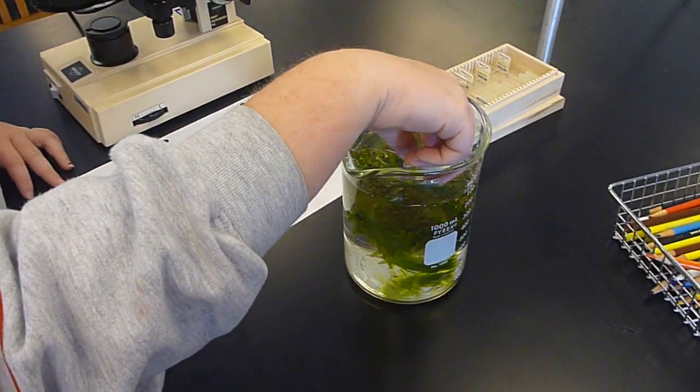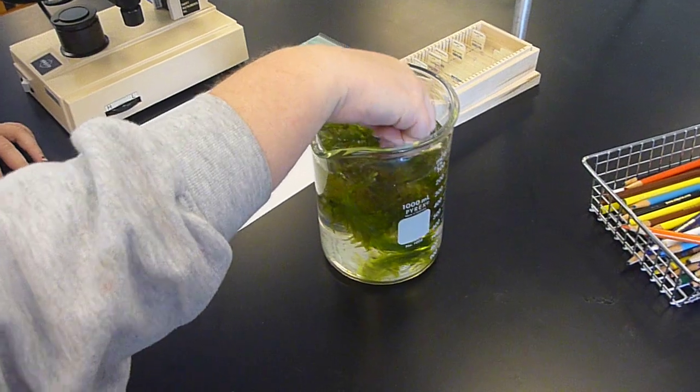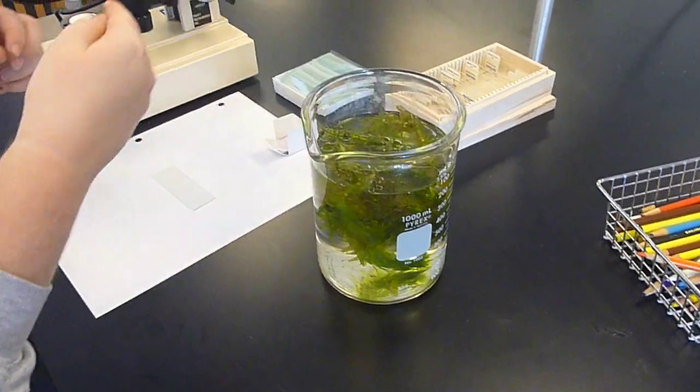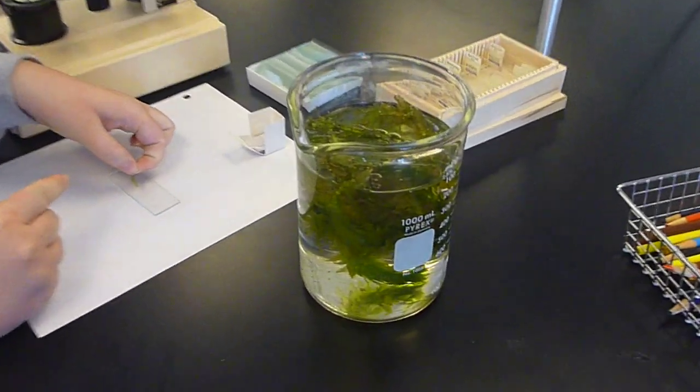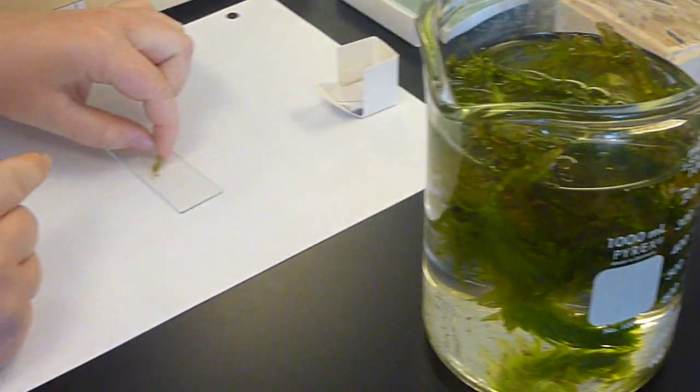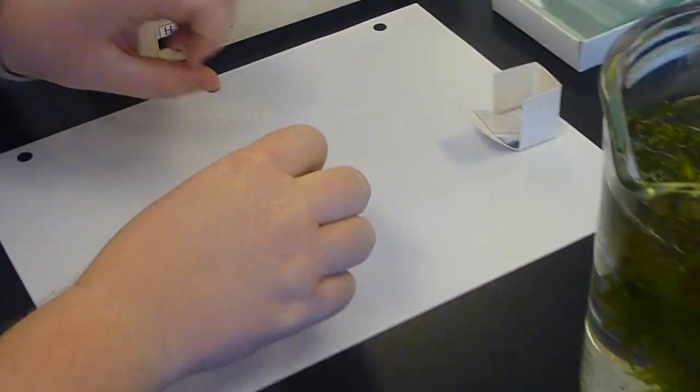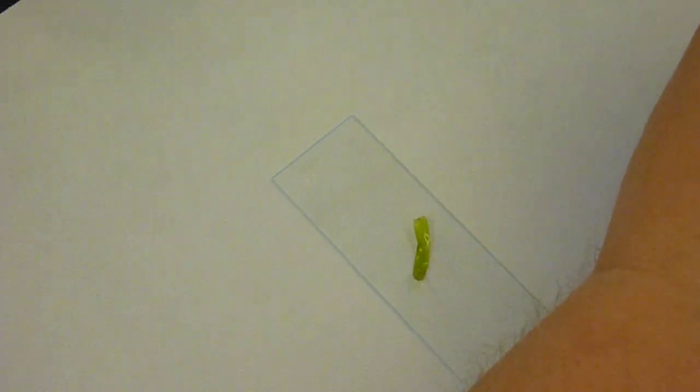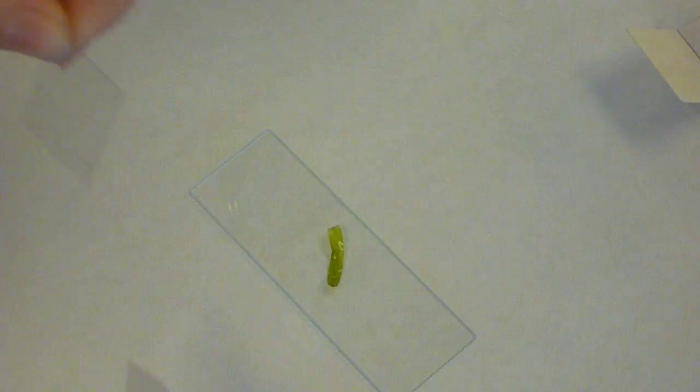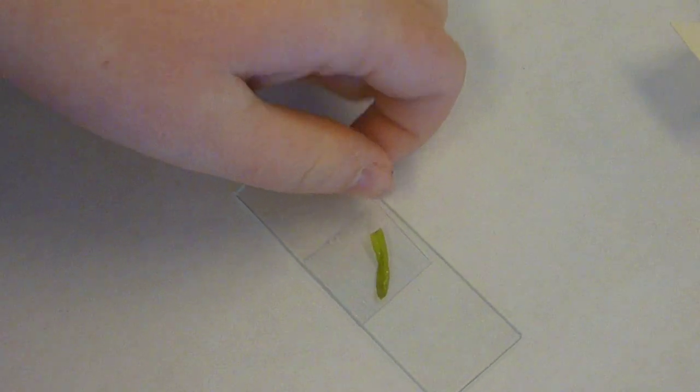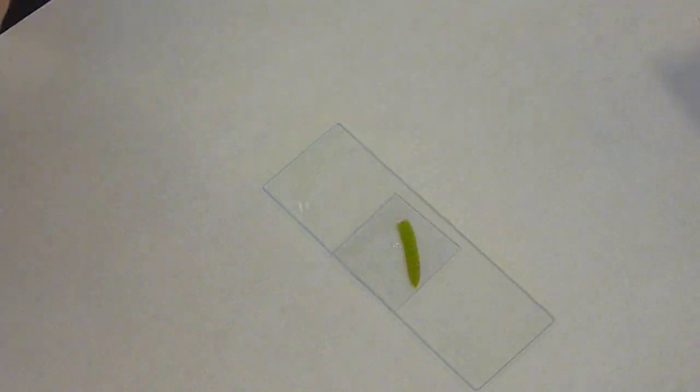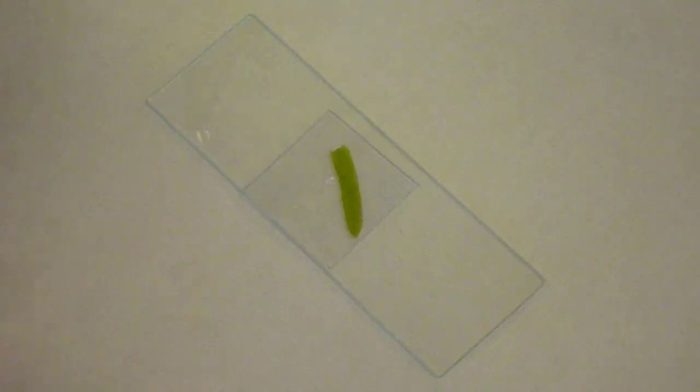So Sarah's going to demonstrate how to prepare a slide of a common aquarium plant called Elodea. Do you notice how she reached in and just grabbed a little leaflet? She's placing it flat on a glass slide and then she's going to put another slide, a smaller glass or plastic slide on top of it called a cover slip. And that's well done.